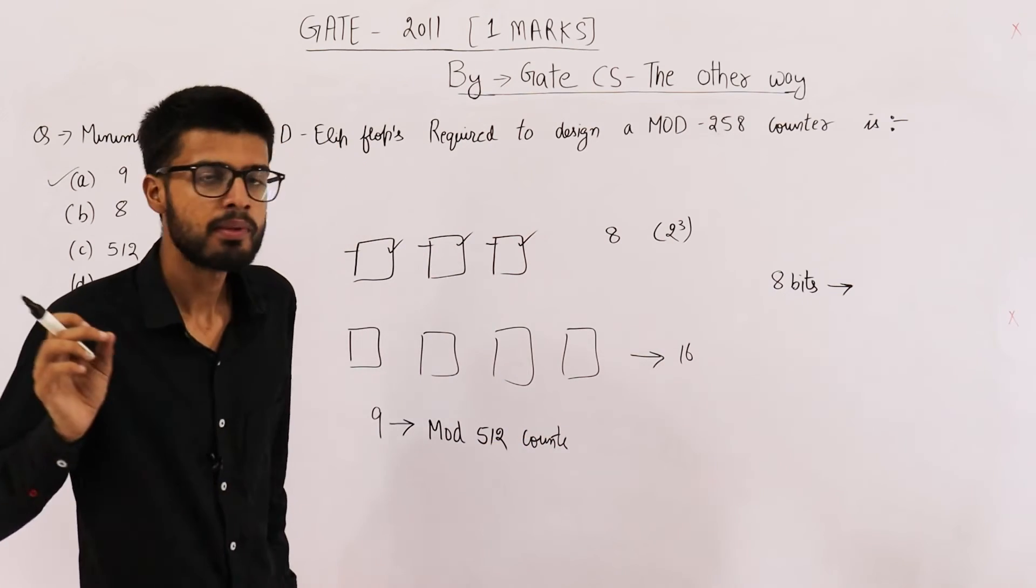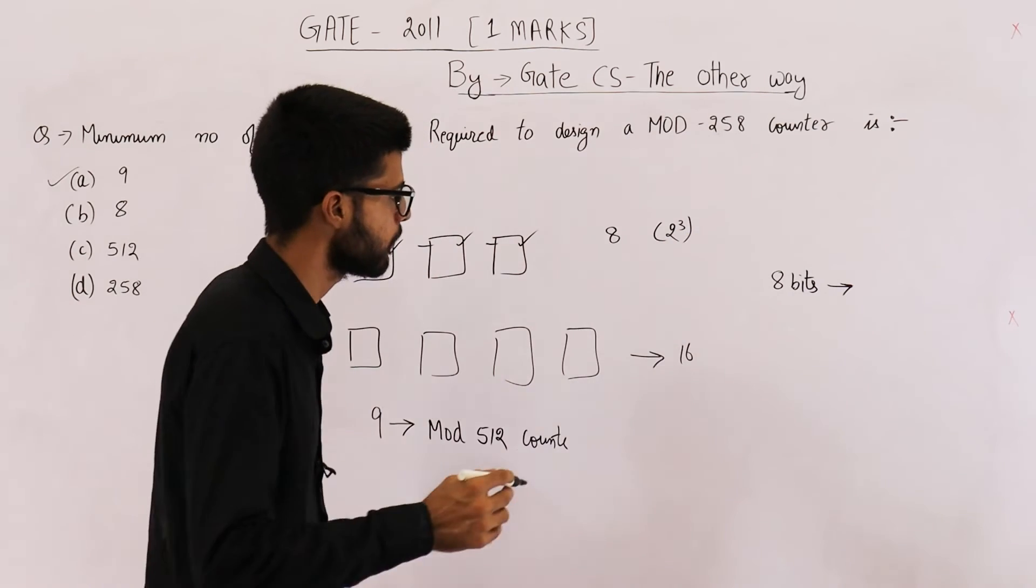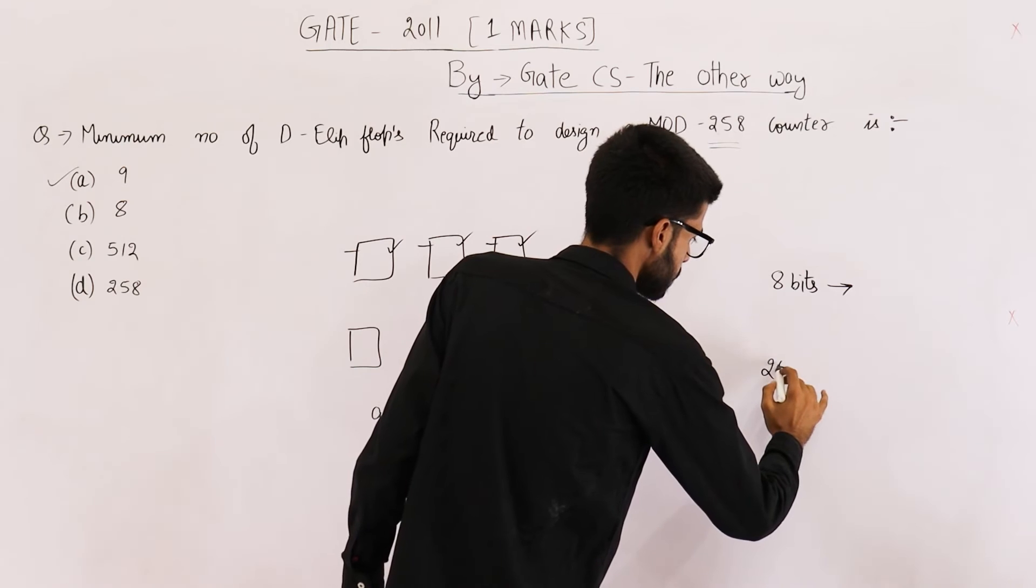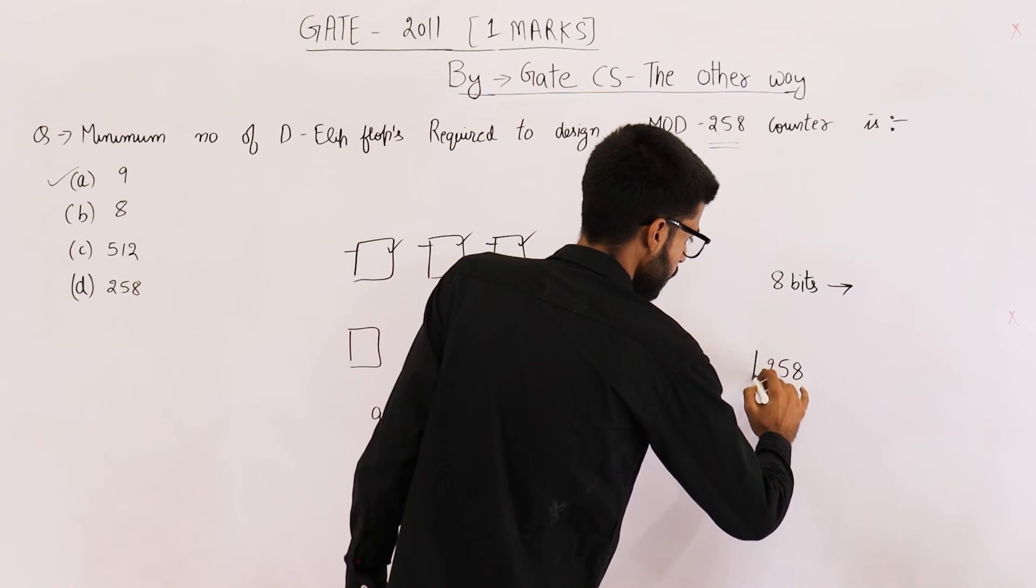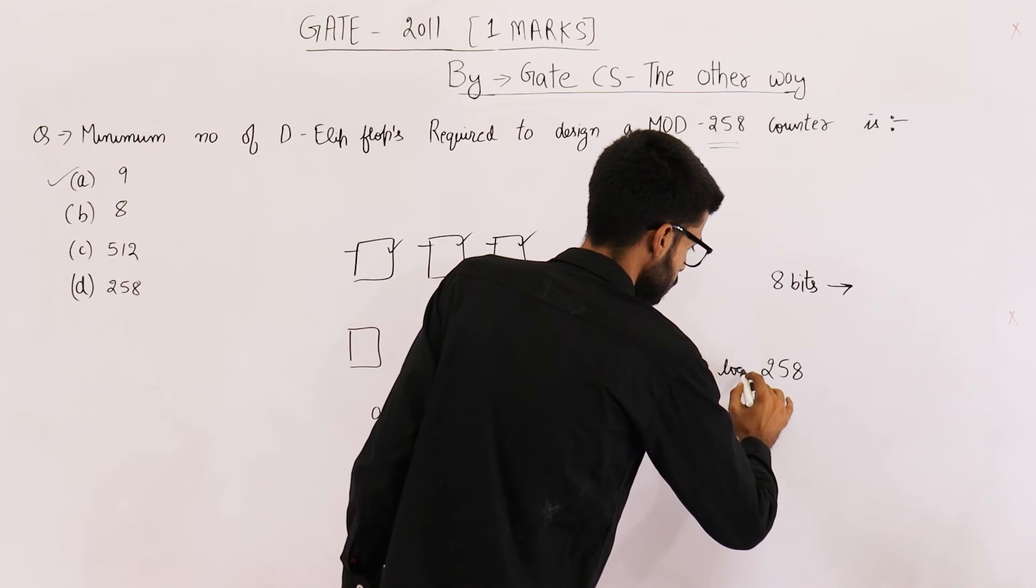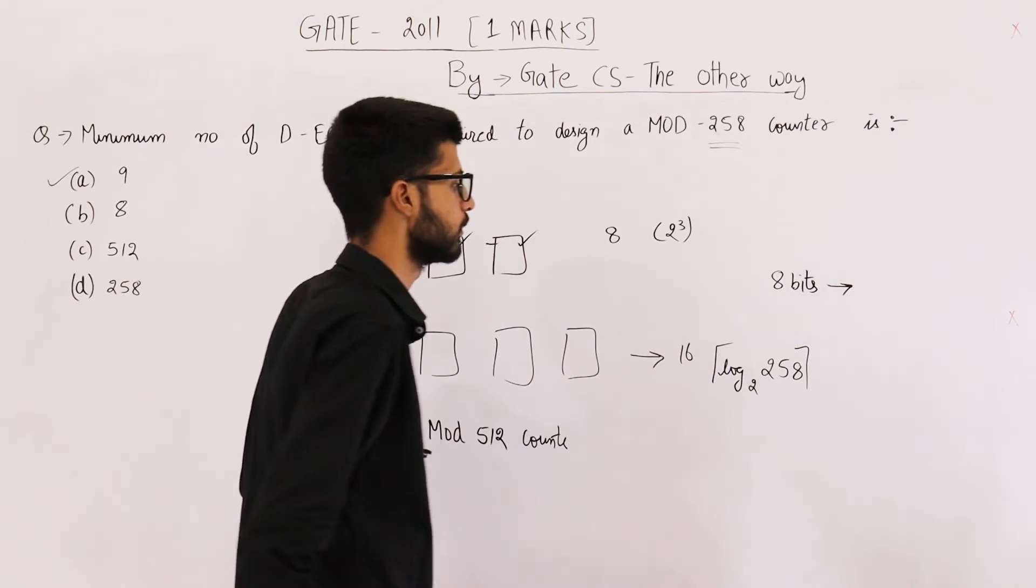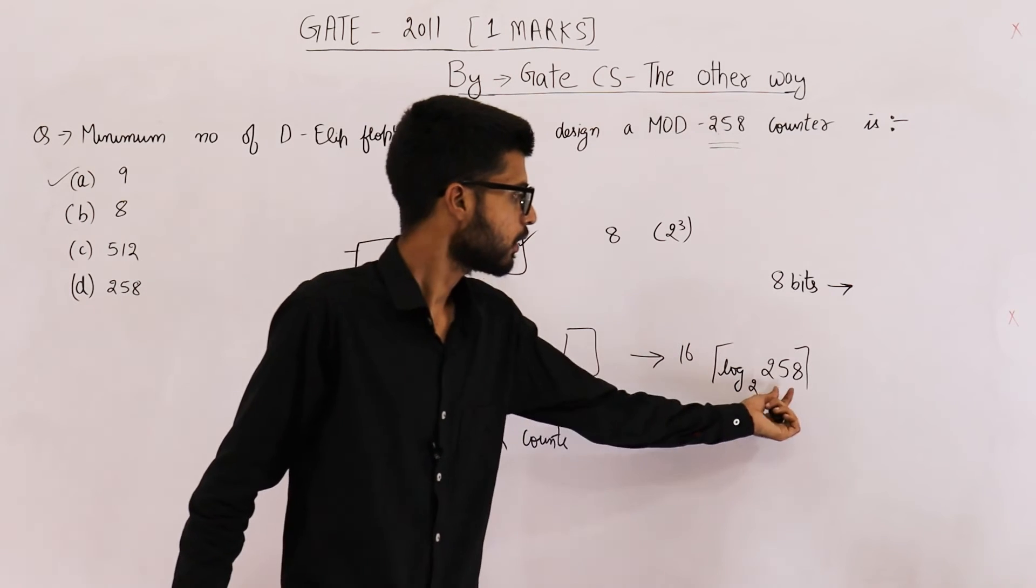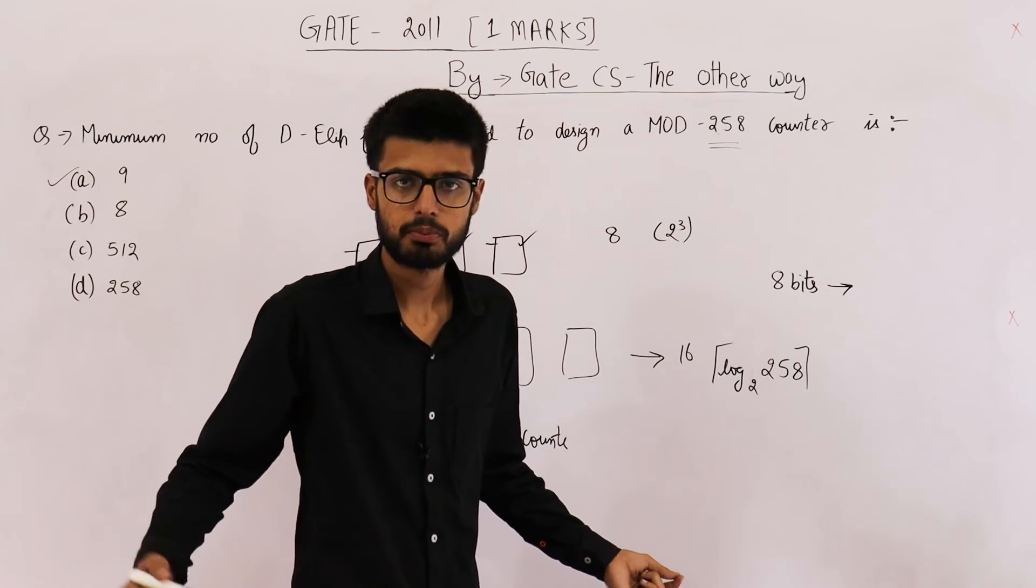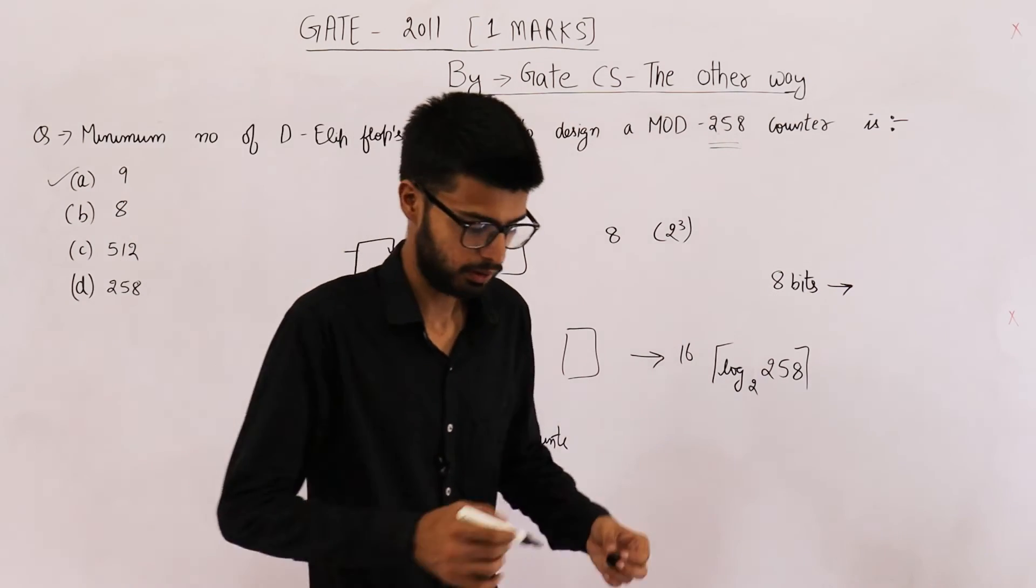The shortcut for finding the answer to such a question is: the number is 258, you just take its log base 2 and then take the ceiling. Its log will be 8 point something, so ceiling of 8.01 or something like that will be 9. The answer is 9.